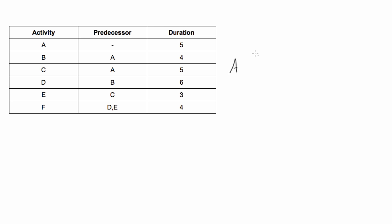Then B and C both depend on A, so we have B depending on A and C depending on A. Now D can start once B is done, so we get activity D. E can start once C is done, so we have activity E coming off of there. Lastly, activity F can start once D and E are both done, so these both lead into activity F.